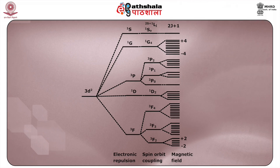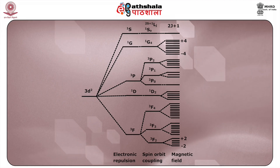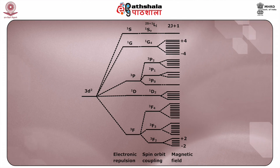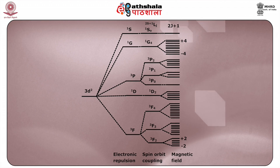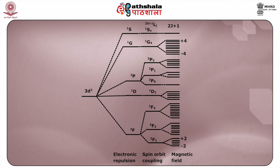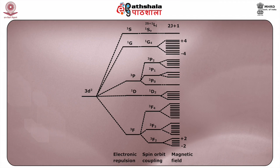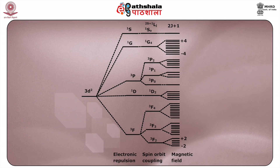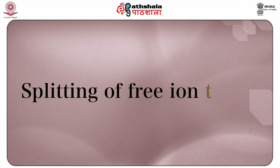For a particular system, the spin multiplicity is assigned according to the number of unpaired electrons. For example, for a D2 configurational system, the number of unpaired electrons is 2, so the spin multiplicity is either 1 or 3, depending on whether the electrons are paired or unpaired.